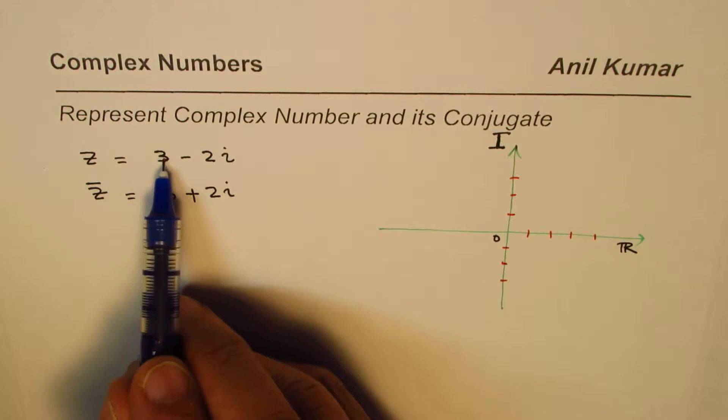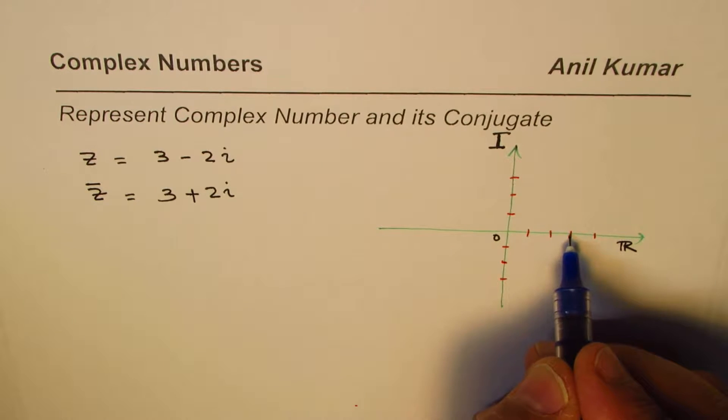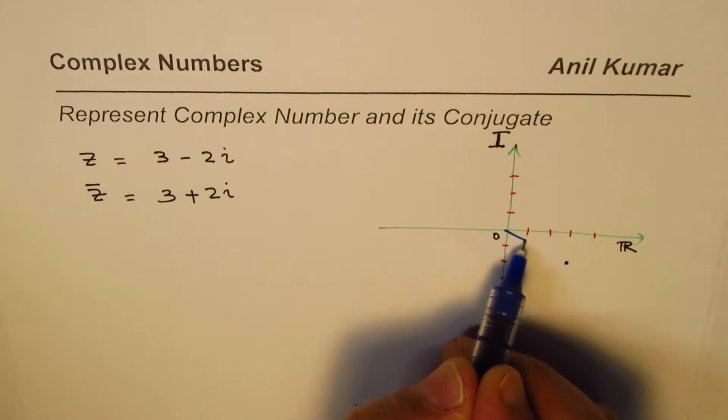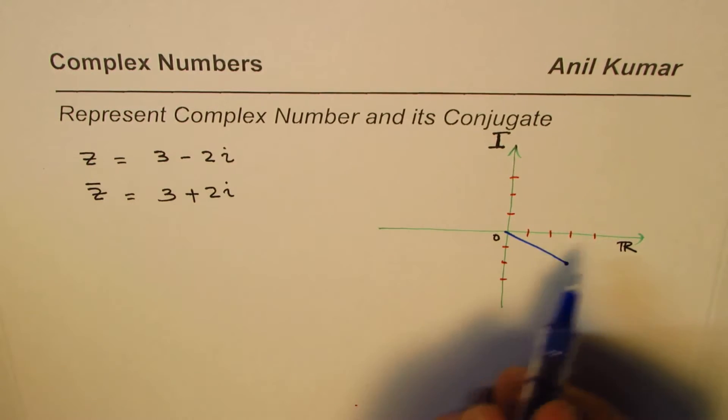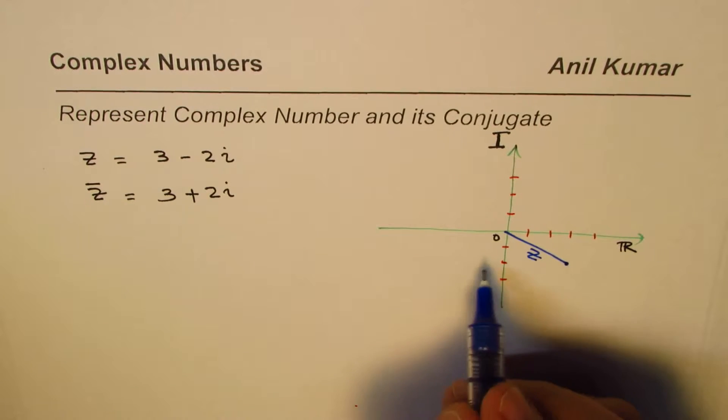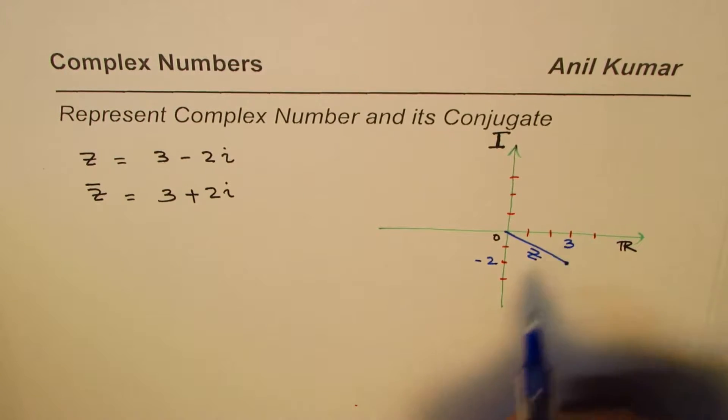So z has 3 real parts: 1, 2, 3. Then minus 2 imaginary, so going down 2 units. This is the complex number z for us. This is -2i and this here is 3.